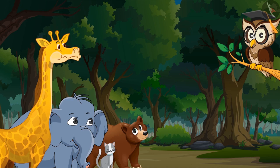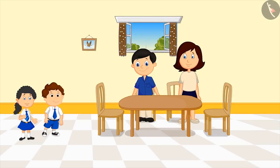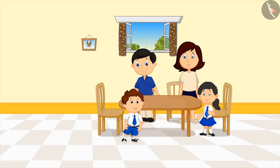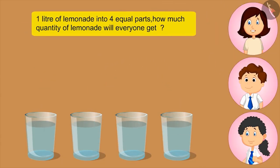Okay, I will recite a story to all of you. Pinky and Bholu live in the village with their parents. Pinky and Bholu got very thirsty while returning from school. Mom, I am very thirsty. Okay, I will make lemonade for everyone. We will also help you in making lemonade. Mother makes one liter of lemonade with the help of Bholu and Pinky and fills it in four glasses. Now tell me, if I divide one liter of lemonade into four equal parts, how many quantity of lemonade will everyone get?